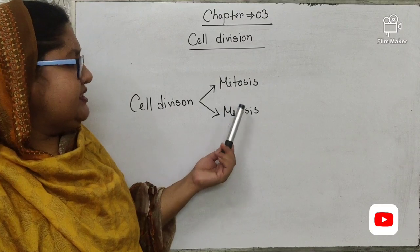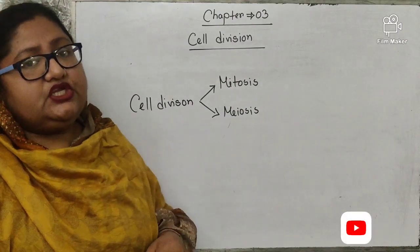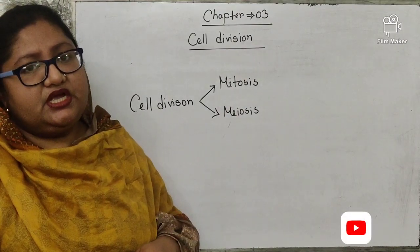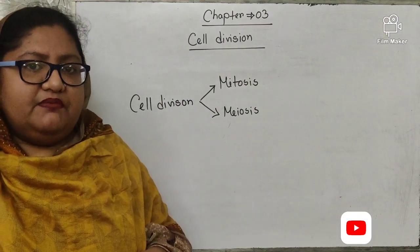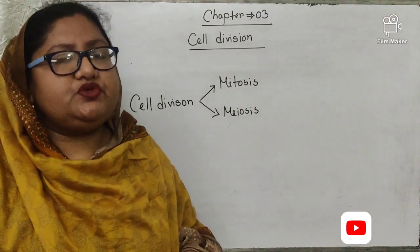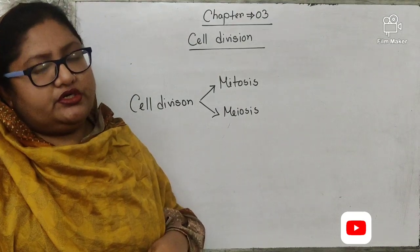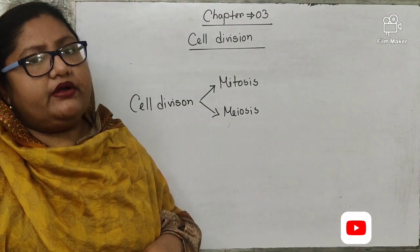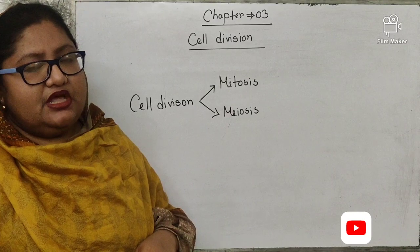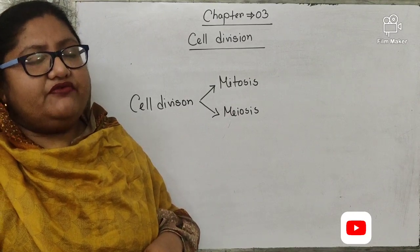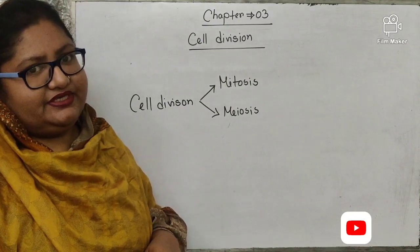Meiosis cell division: the process of cell division in which the nucleus divides twice but the chromosome divides only once, producing four daughter cells, where the number of chromosomes in the daughter cell becomes half that of the mother cell, is called meiosis cell division.